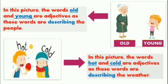Now look at the next picture — there's an old lady and a young little girl. In this picture, the words 'old' and 'young' are adjectives as these words are describing the people, and people are nouns. 'Old' is describing the lady, and 'young' is describing the girl. Then in the third picture, one boy is feeling hot and the other is feeling cold, so the words 'hot' and 'cold' are adjectives as they are describing the weather.